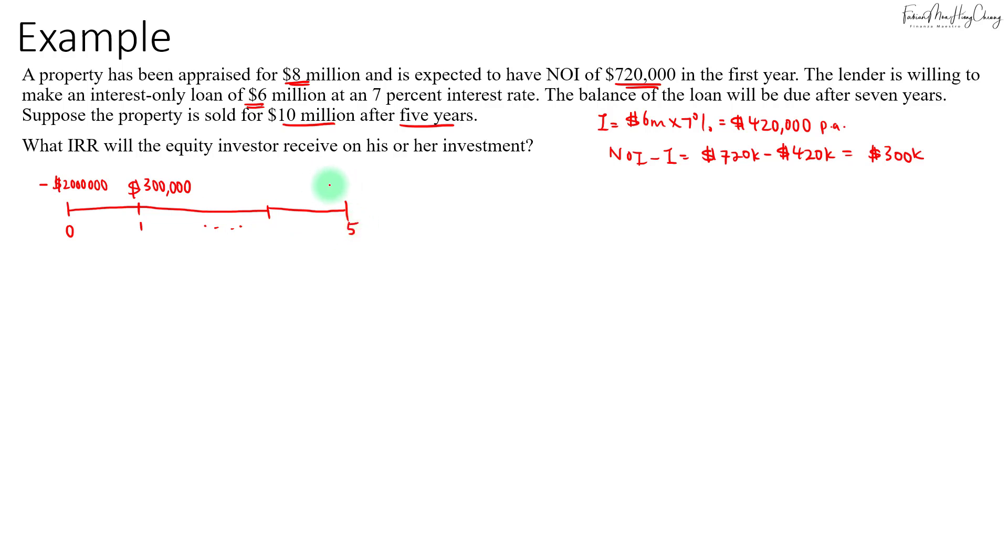In year five you will get the $300,000, and then after that we're going to sell the building for $10 million. Upon receiving the $10 million you will pay back the loan of $6 million, so that leaves the equity investor with $4 million.